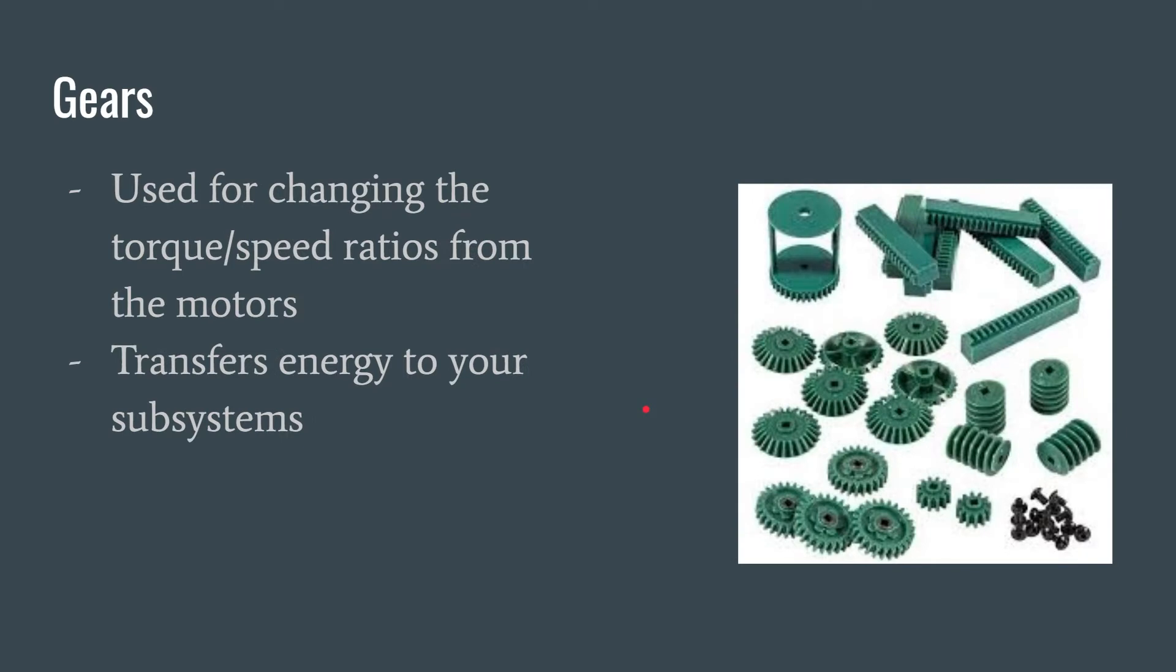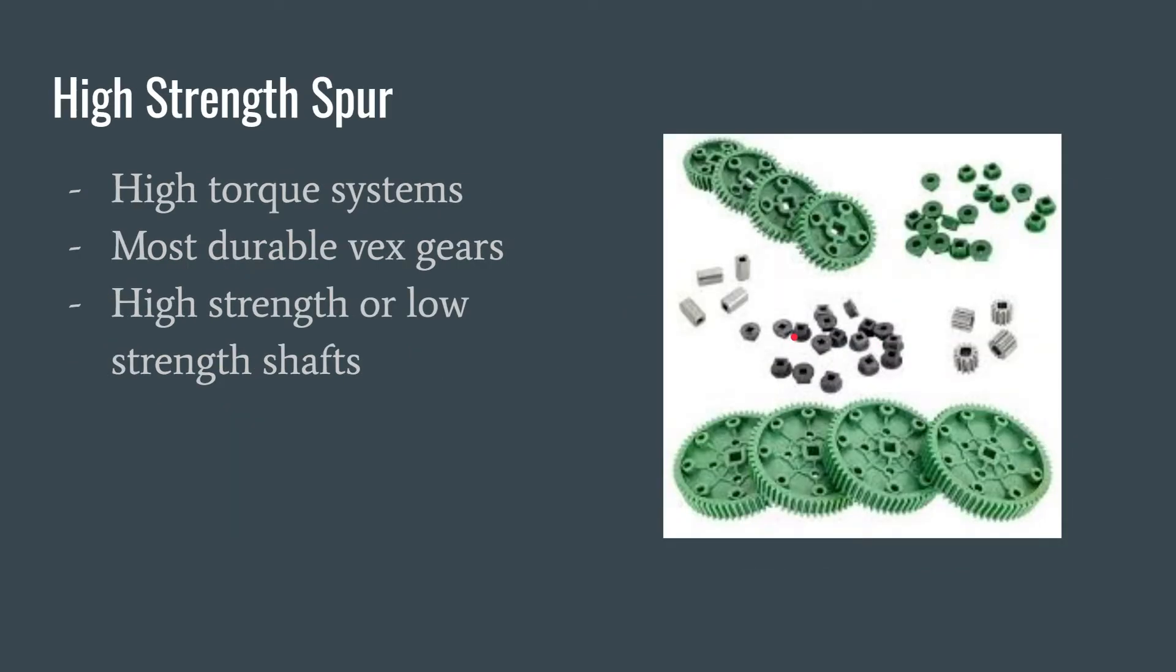So gears. There are all types of gears in VEX, the big ones, small ones, thick ones, shaped ones, and even the metal ones, as you can see here. They are used to transfer energy from the motors over to your subsystems and get movement. The first gear we have is the high strength spur gear. They're often used in high torque situations and usually do not skip as often as any other VEX gear. Skipping is when these little teeth kind of slide past each other without moving the next gear.